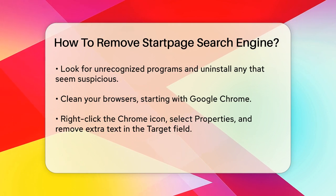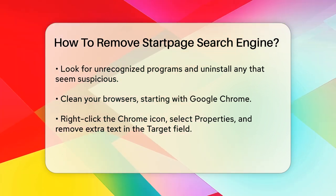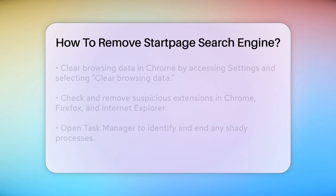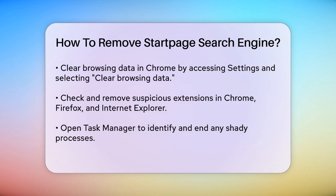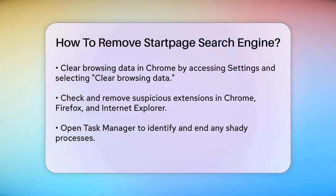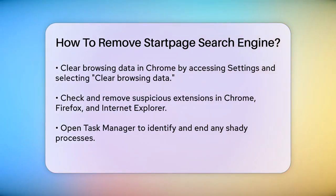For Firefox, go to the main menu, select Add-ons, and then Extensions. Remove any suspicious browser extensions, even if they don't have the name Start Page Search Engine on them. For Internet Explorer, go to Tools, select Manage Add-ons, and check for any suspicious add-ons in the right panel.